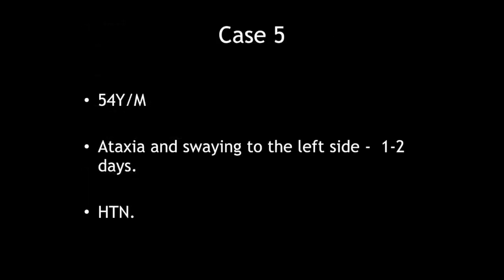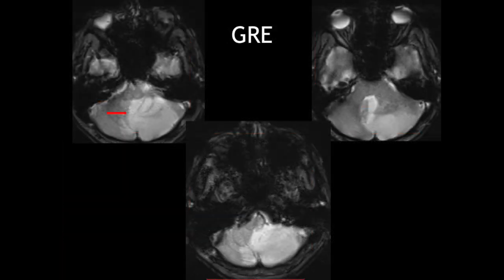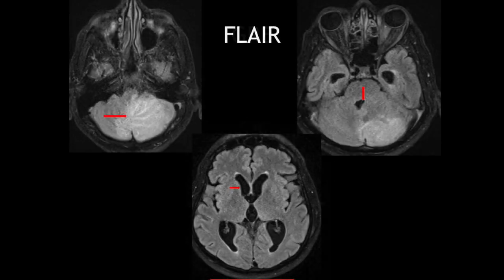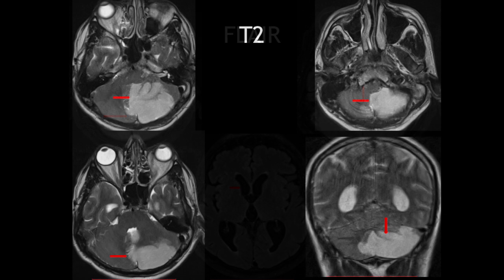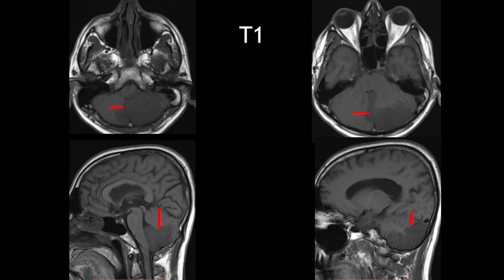A 54-year-old male with known hypertension had ataxia and swaying to the left side since one or two days. MRI showed a large wedge-shaped area of restricted diffusion within the posterior fossa involving the left cerebellar hemisphere, with no blooming to suggest hemorrhage. It was causing mass effect with effacement of the fourth ventricle and resultant dilatation of the third and bilateral lateral ventricles. T2 coronal and T1 sagittal images showed classical involvement of the inferior cerebellum, consistent with a non-hemorrhagic PICA territory infarct.